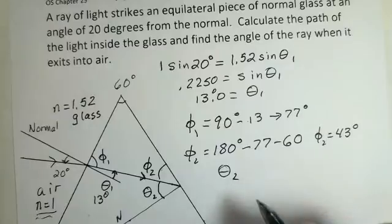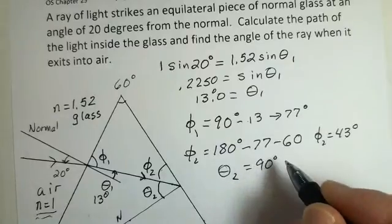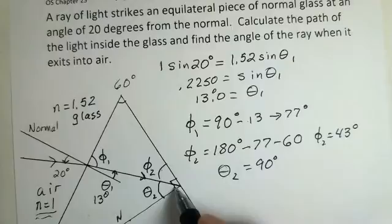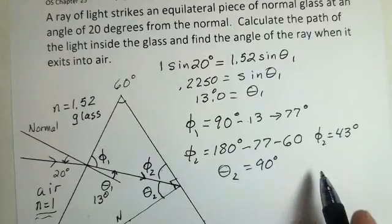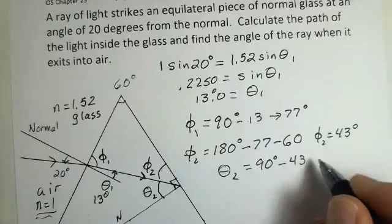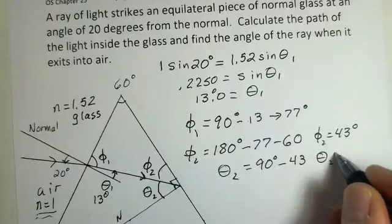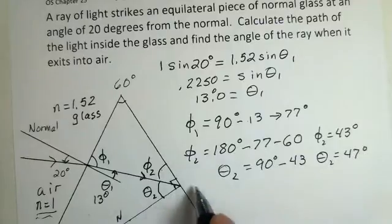Now we can calculate theta 2. Again, the normal is 90 degrees away from the surface here. We know phi 2 is 43 degrees, so theta 2 equals 90 minus 43, giving theta 2 equal to 47 degrees. Let's now attempt the refraction calculation.